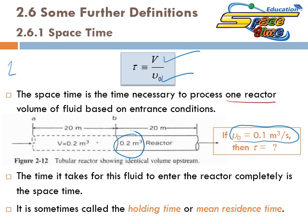Let's do a quick calculation. We can calculate tau: tau equals the volume, which is 0.2 cubic meters, divided by the volumetric flow rate — representing how fast the material is entering the reactor — which is 0.1 cubic meters per second. The units will be seconds, and 0.2 divided by 0.1 is simply 2 seconds.